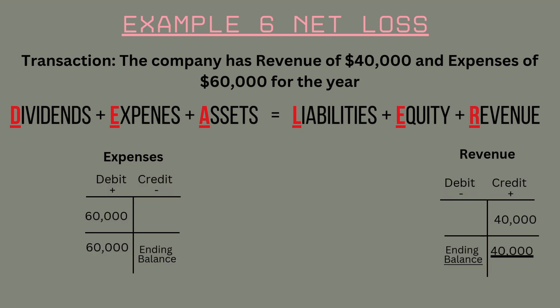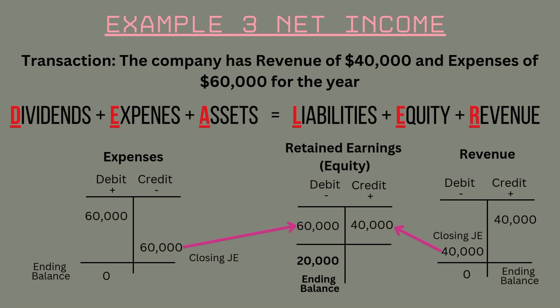Now let's look at if the company has a net loss for the period instead of net income. A period net loss also reduces equity — it has the opposite effect as net income. When expenses exceed revenues, the company has a net loss, which decreases equity through the retained earnings account. Suppose the company has revenue of $40,000 and expenses of $60,000 for the year. You debit the expense account for $60,000 and credit revenue for $40,000, resulting in a net loss of $20,000. The debits exceed the credits, resulting in an overall debit to retained earnings when the balances are transferred to close the period, decreasing equity by $20,000.